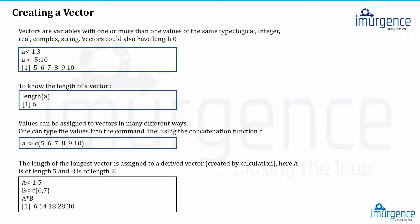Values can be assigned to a vector in different ways — there are different routes to do the same thing. You can also write 'a <- c(5,6,7,8,9,10)', where c() stands for the concatenation or combine function. The elements must be separated by commas, which may not be visible in graphical output. This gives exactly the same result as 'a <- 5:10'.